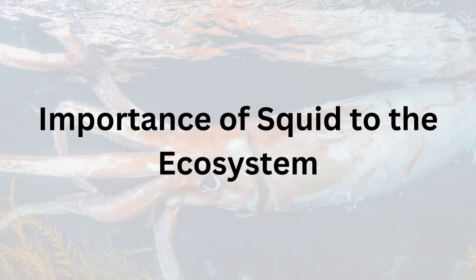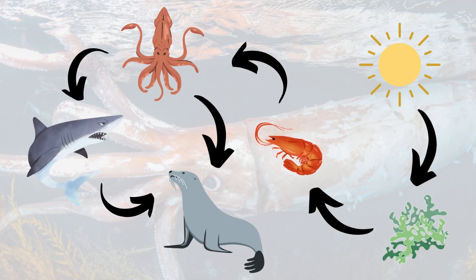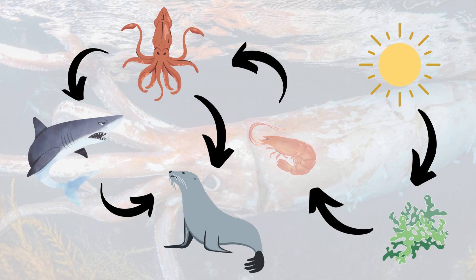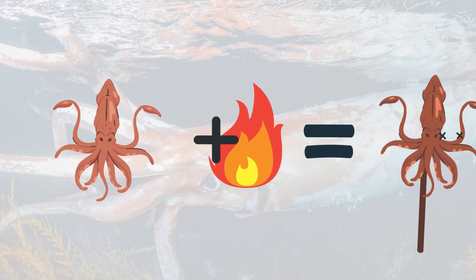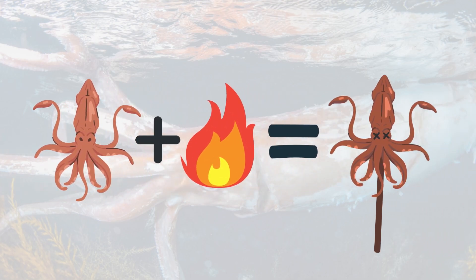What's the importance of squid to their ecosystem? In its ecosystem, squid is an important part of the food web, as mentioned earlier in the video. And to humankind, squid is a valuable seafood commercially harvested around the world for its rich protein, vitamins, and minerals, which make it a nutritious food source.